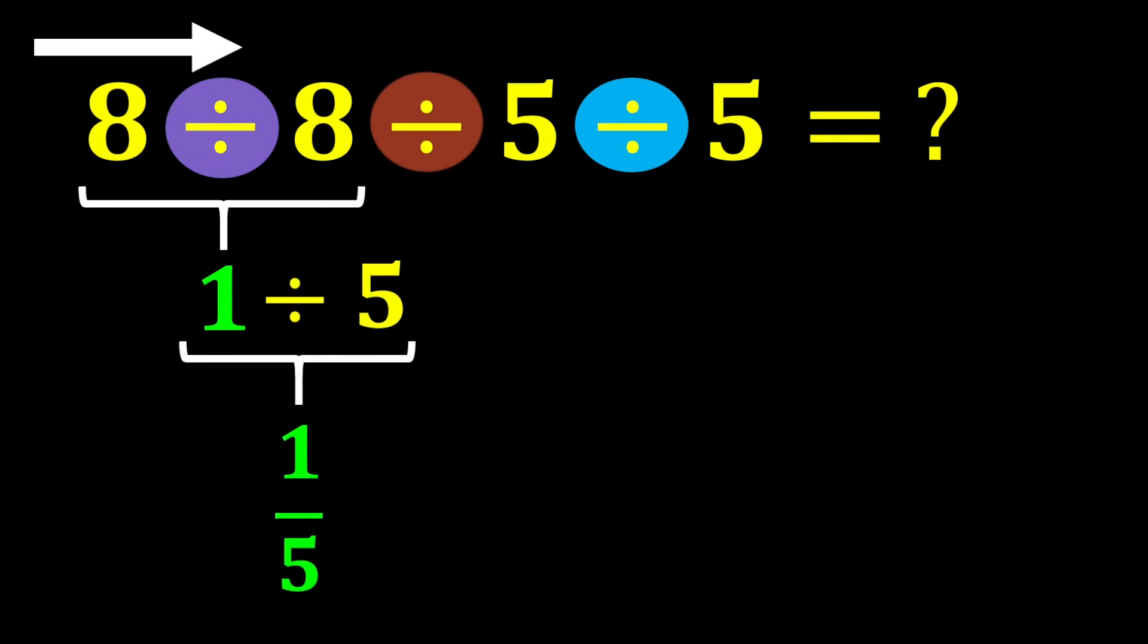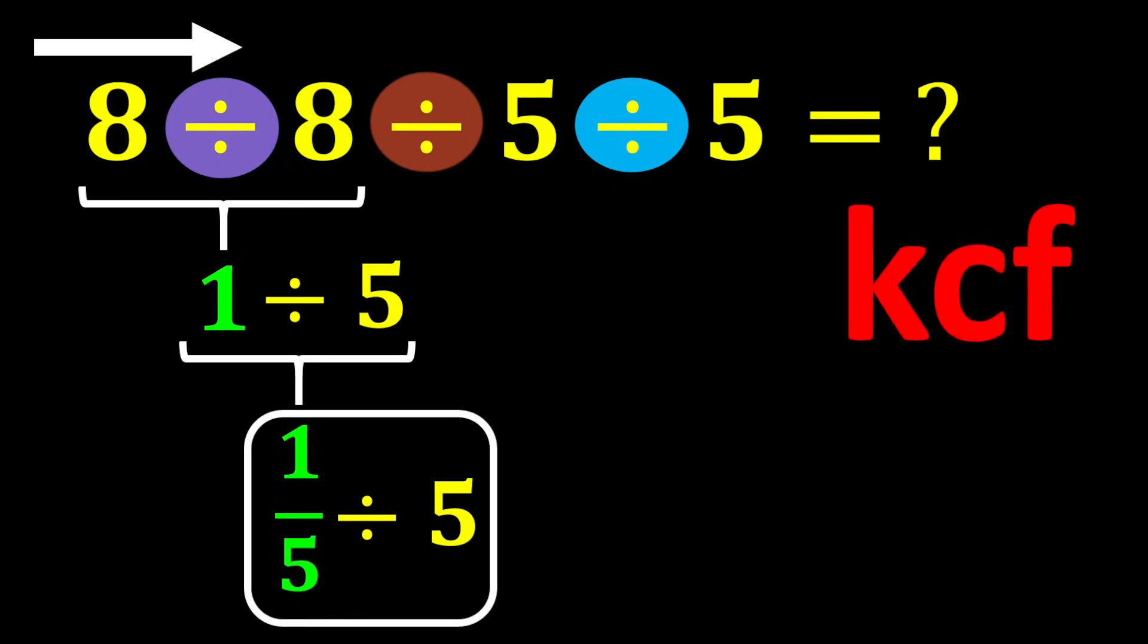To solve this part, we use the KCF rule. K stands for keep, C stands for change, and F stands for flip. The KCF rule is a simple rule for dividing fractions. According to this rule, we keep the first number as it is, change the division sign to multiplication, and flip the second number. We keep one over five as it is, division is changed into multiplication, and five is flipped.